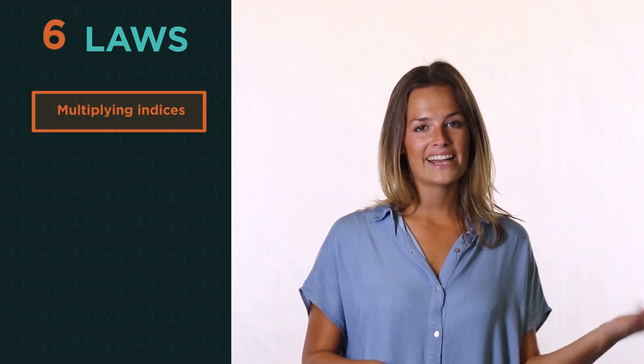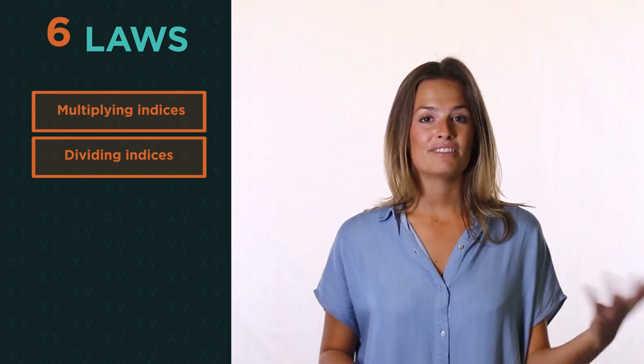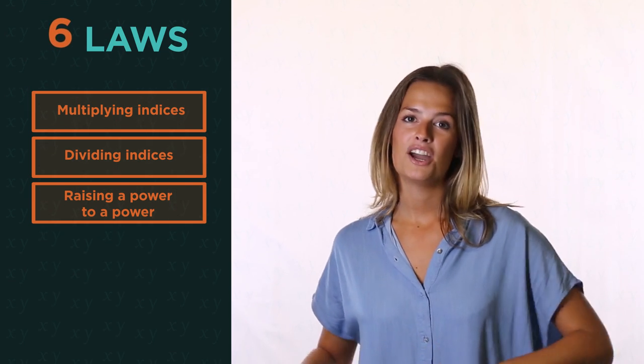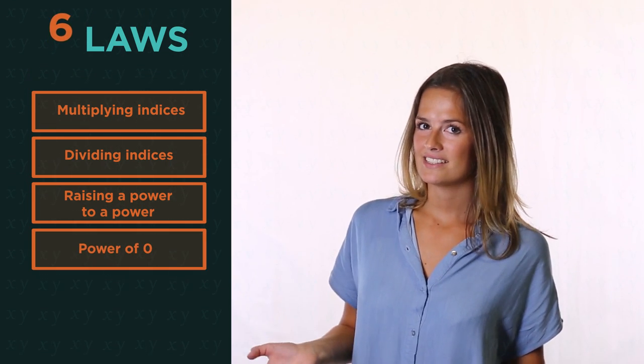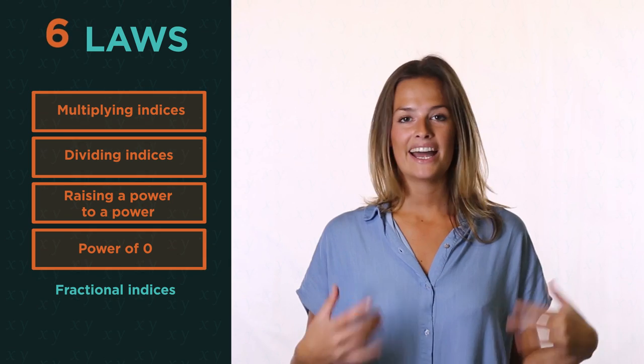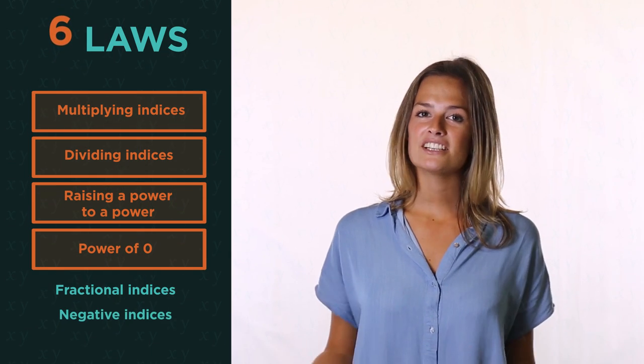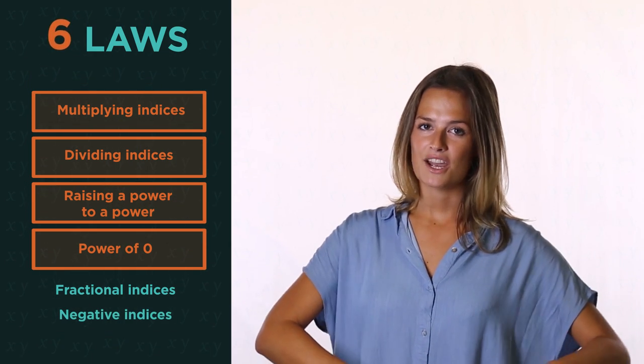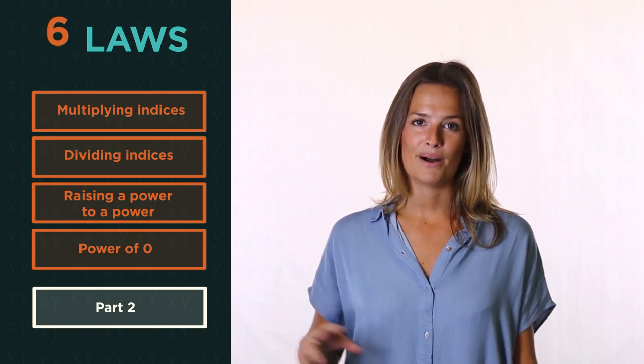So there are six laws that we need to know: multiplying and dividing with indices, raising a power to a power, what a power of zero means, and then fractional and negative indices. We're going to look at the first four in this video and then the last two in part two. I promise you they really are quite logical.